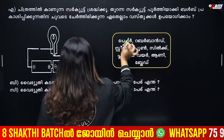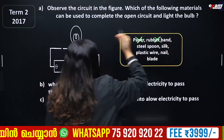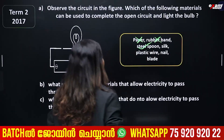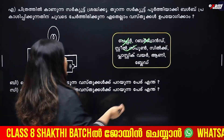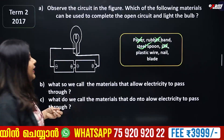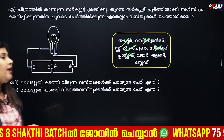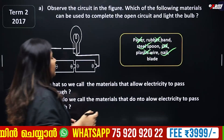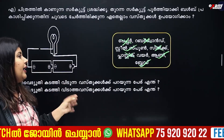The rubber band is one option. Silk — you just use silk. Plastic — is it plastic? No, plastic is not wider. Here is the nail. The blade — seek it out. So we need to use a steel spoon and we need to use a blade.